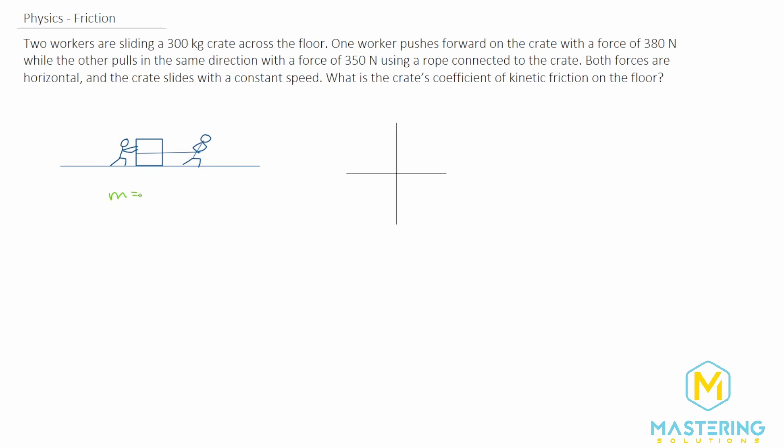The mass of the crate is 300 kilograms and we need to figure out the coefficient of kinetic friction, mu sub k. Force one is 380 newtons and force two is 350 newtons. Let's draw a free body diagram to represent all the forces.